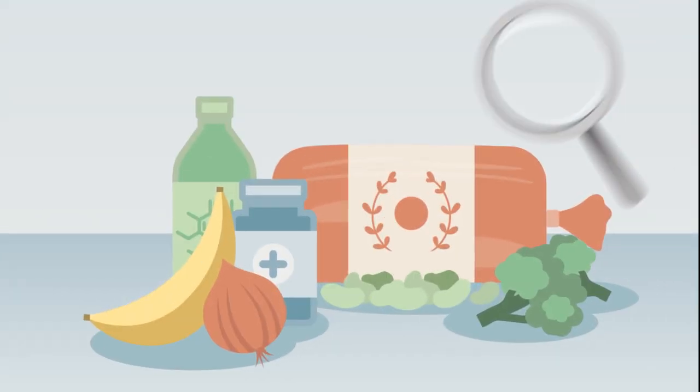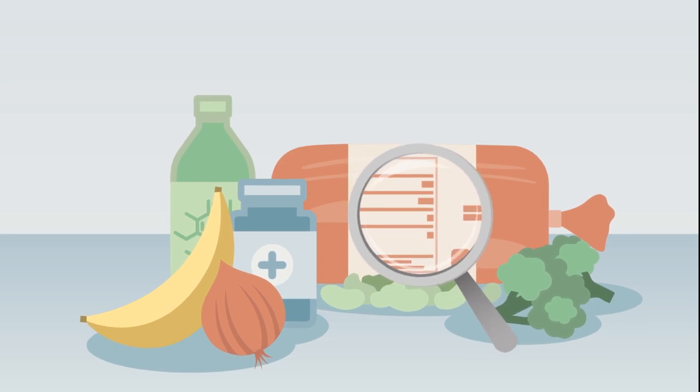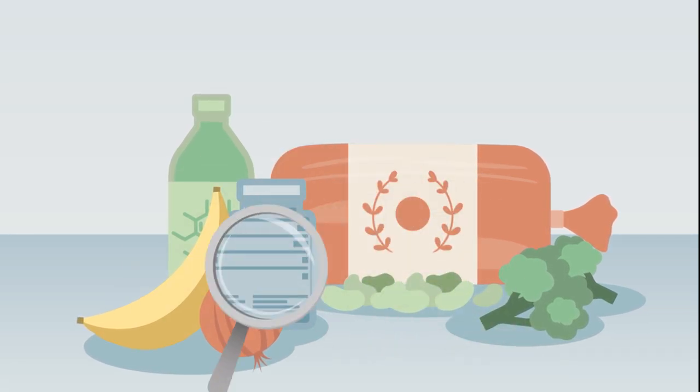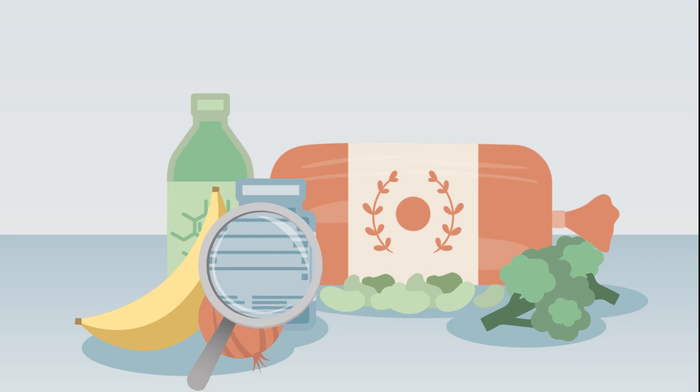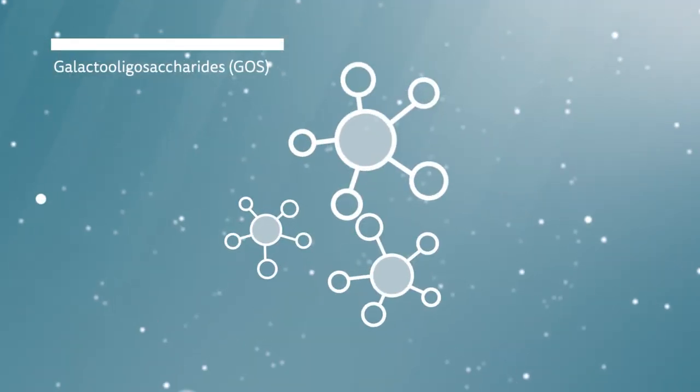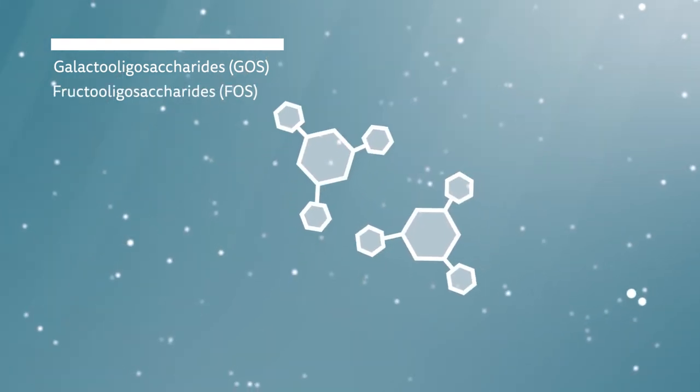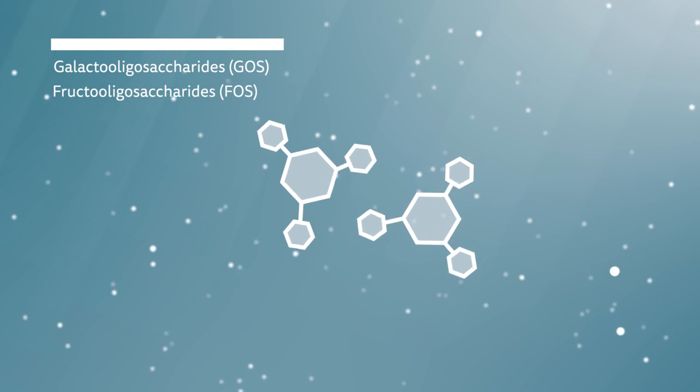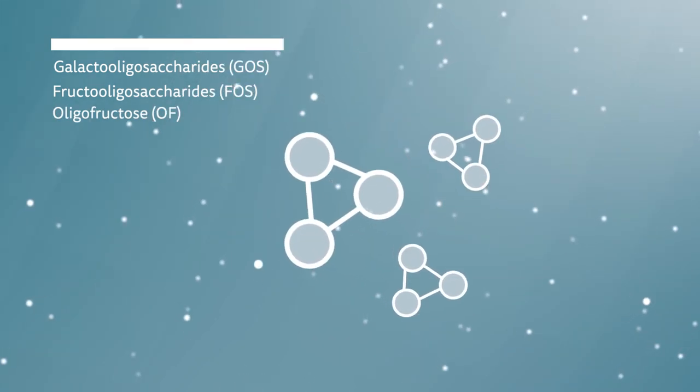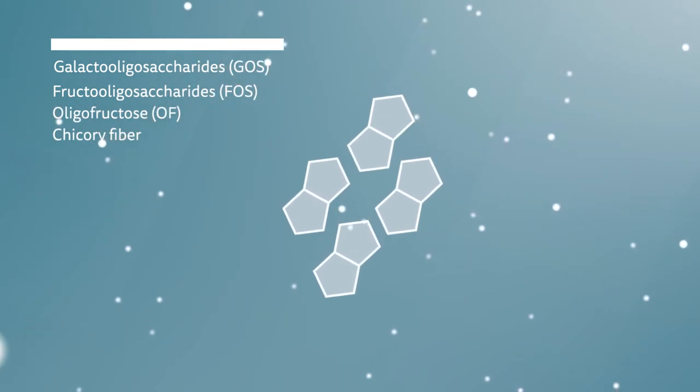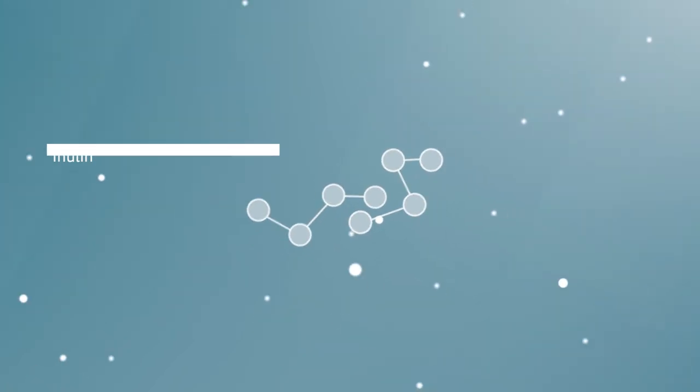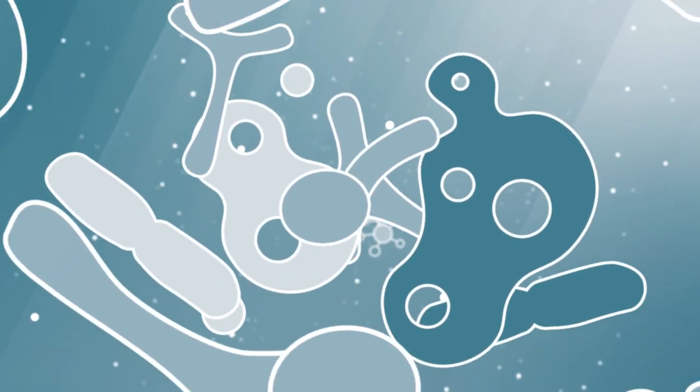However, the word prebiotic is seldom used on labels, so it can be difficult to determine if prebiotics are actually present. Instead, look for the actual names of the prebiotics, such as galacto-oligosaccharides or GOS, fructo-oligosaccharides or FOS, oligofructose, chicory root or chicory fiber, and inulin.